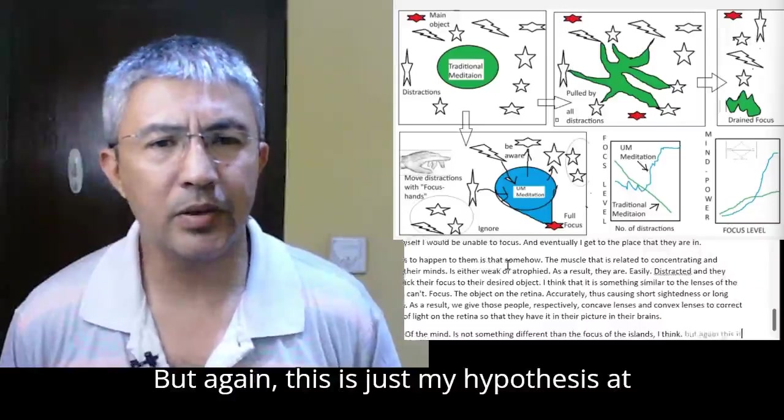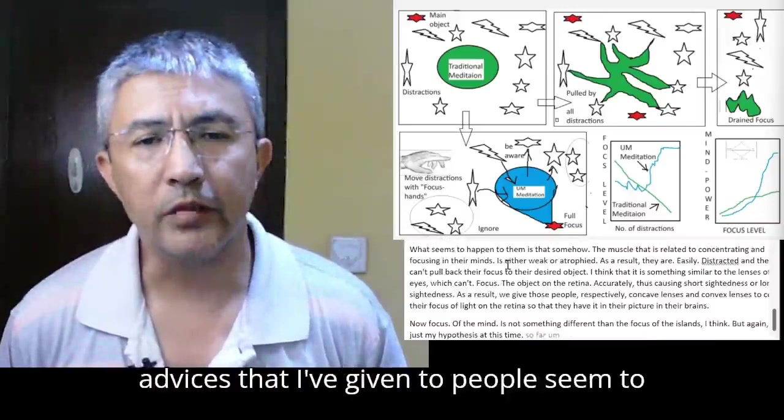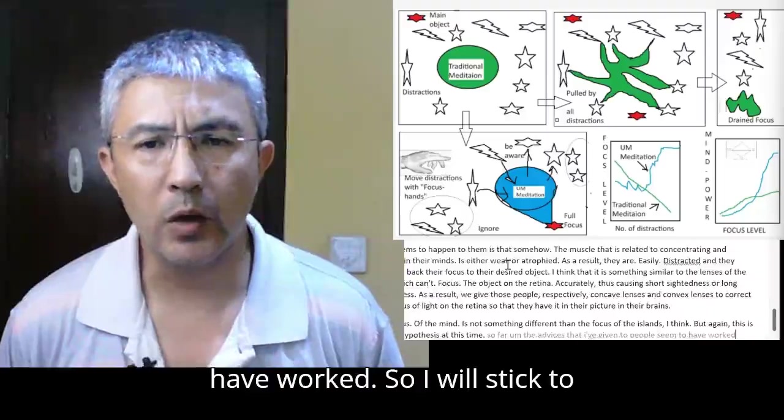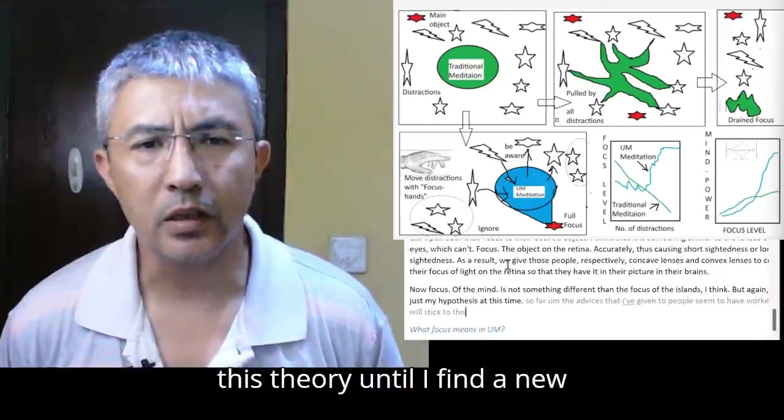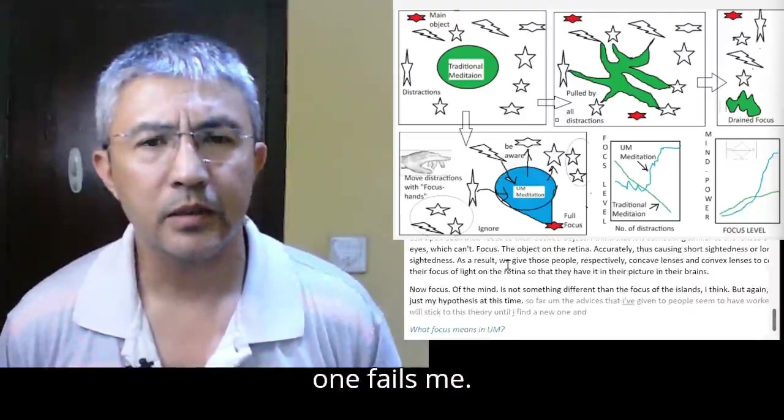As a result, we give those people concave lenses and convex lenses to correct their focus of light on the retina so they have a clear picture in their brains. Focus of the mind is not something different than the focus of the eye lens, I think.